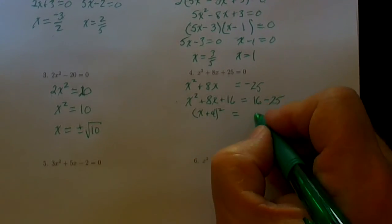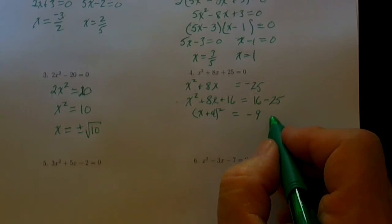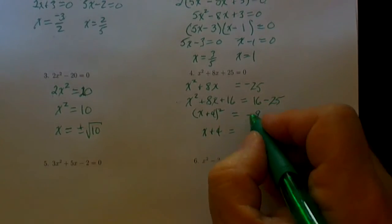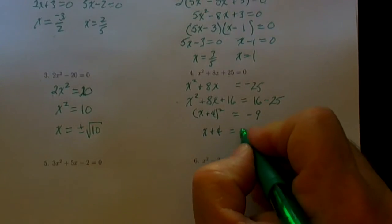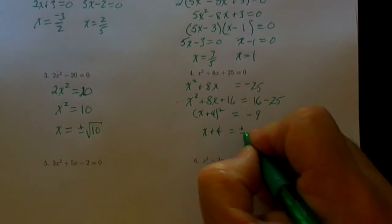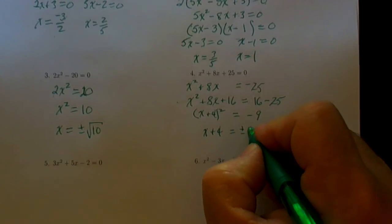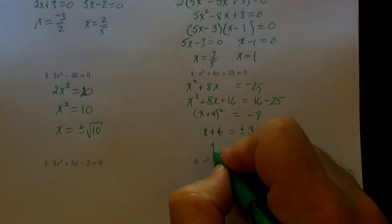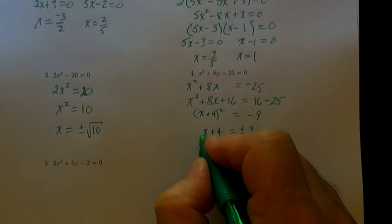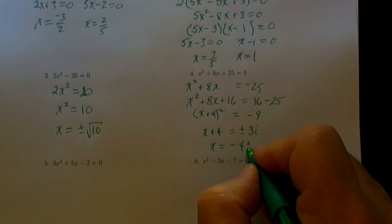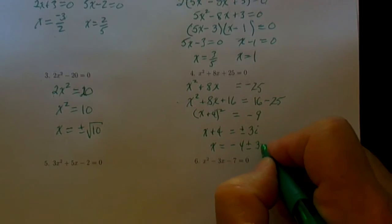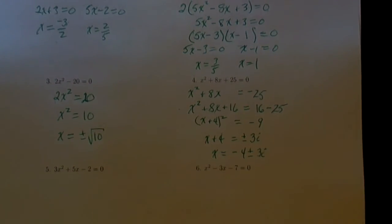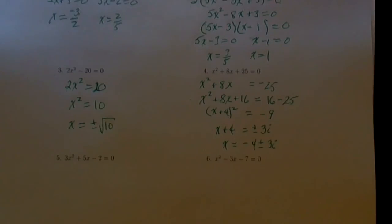This becomes the perfect square (x plus 4) squared — you can multiply it out to verify. On the right side we have negative 9. Taking the square root of both sides gives x plus 4 equals the square root of negative 9, and we must account for the plus and minus. The square root of negative 9 is 3i, so we're getting complex numbers. Therefore x equals negative 4 plus or minus 3i. We should plug those back into the original equation to verify — that would require complex number arithmetic.